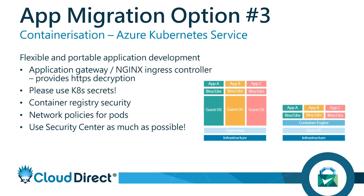Next is Kubernetes secrets. Please use secrets where you can when using Azure Kubernetes — store your data, whether that's connection strings or passwords, in secrets and inject them into the pods. We see quite a lot of people leaving connection strings in the YAML files used for deployment. While this will work, it means that if anyone gets hold of your YAML files, they have your secrets, passwords, and connection strings to connect to your databases or applications.